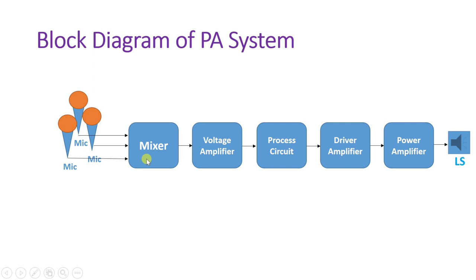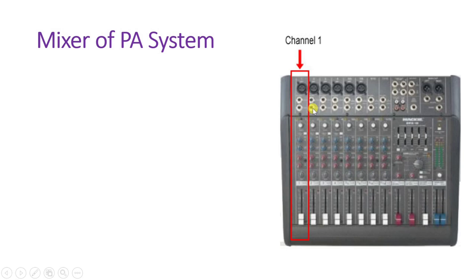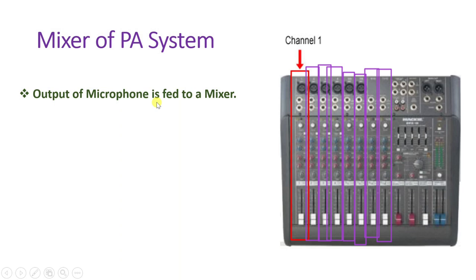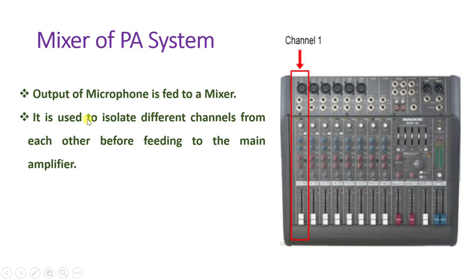We will now go through each element step by step, beginning with the mixer. Multiple mics provide multiple channels, all connected to the mixer. The output of each microphone is given to the mixer, which is used to isolate different channels from each other before feeding to the main amplifier. If channels are not isolated, they will cancel sound from each other.